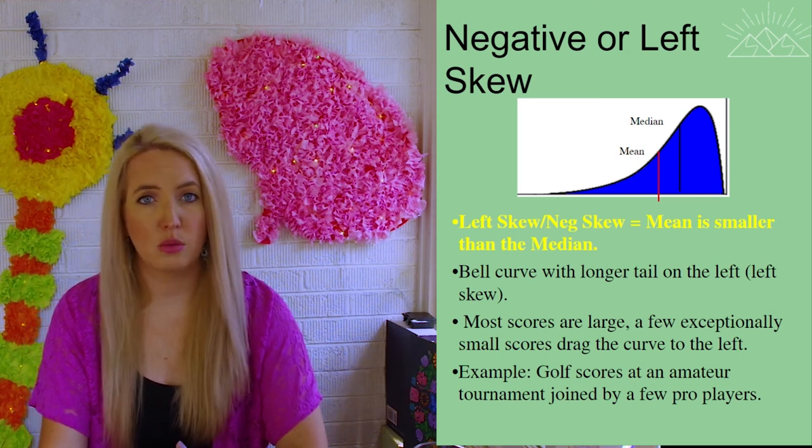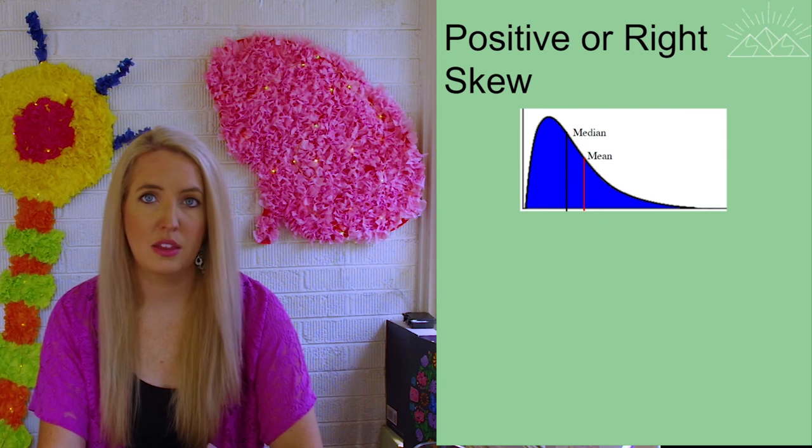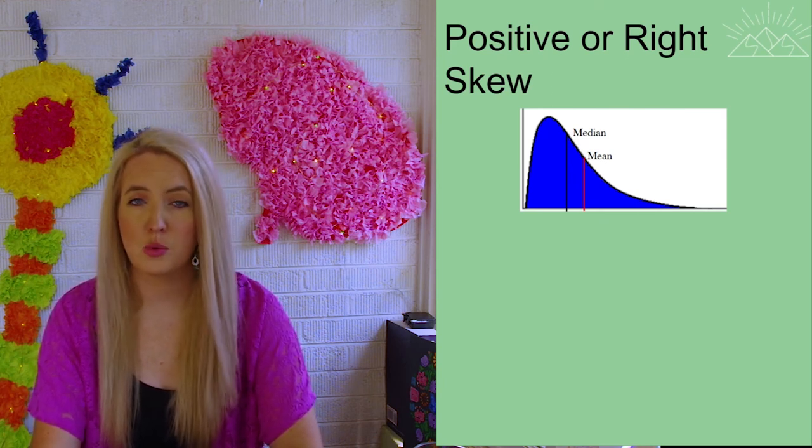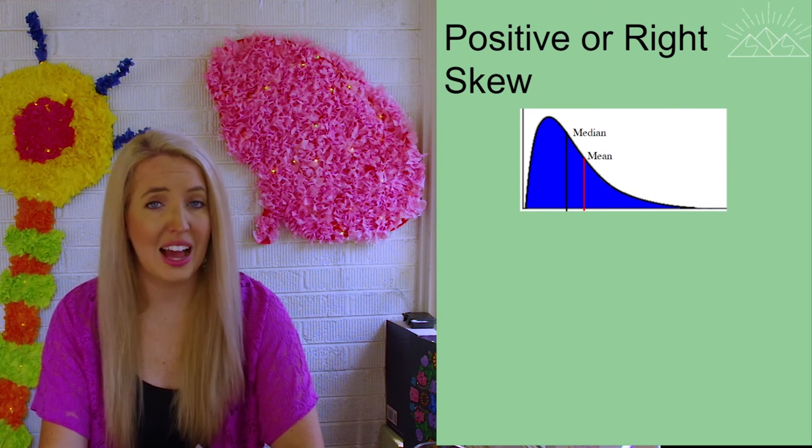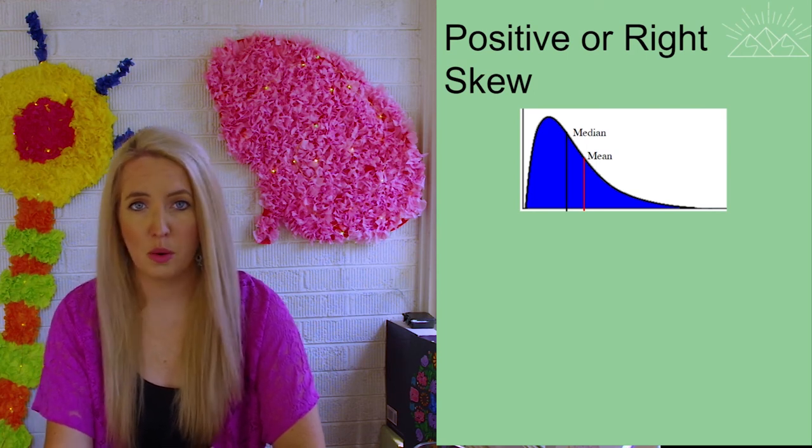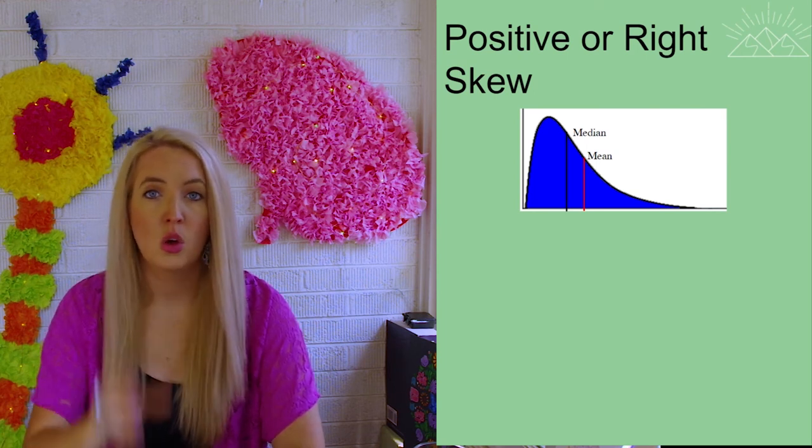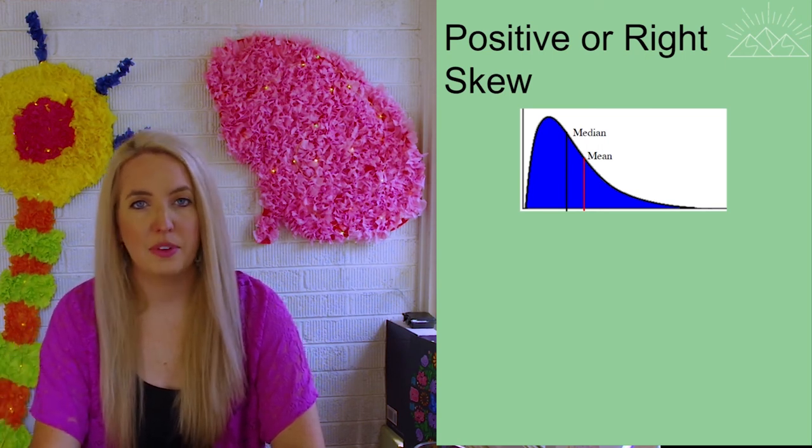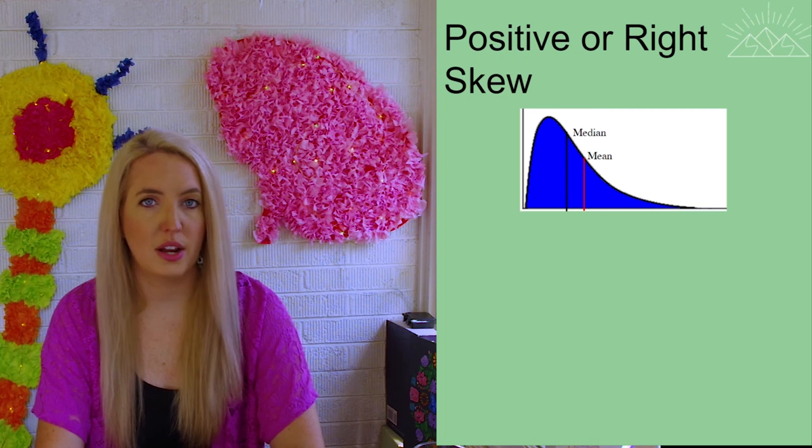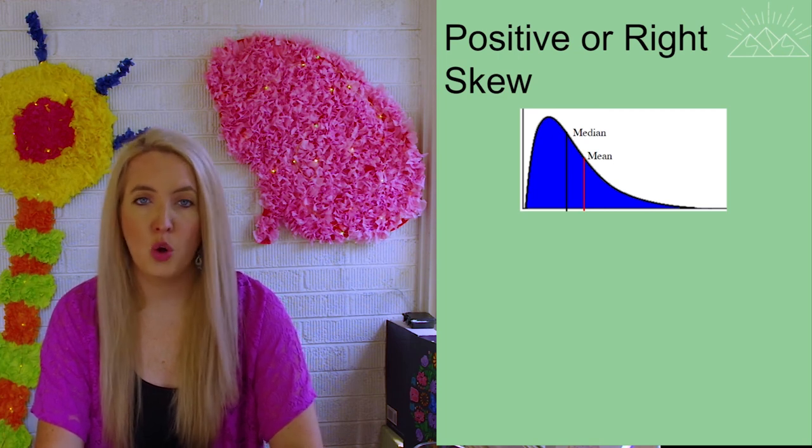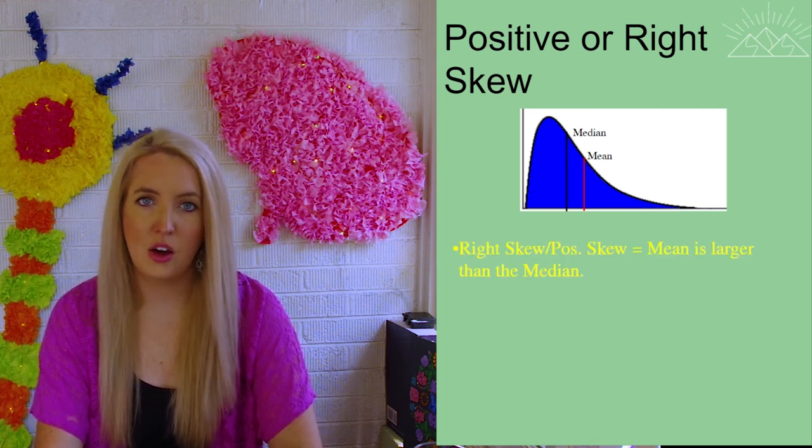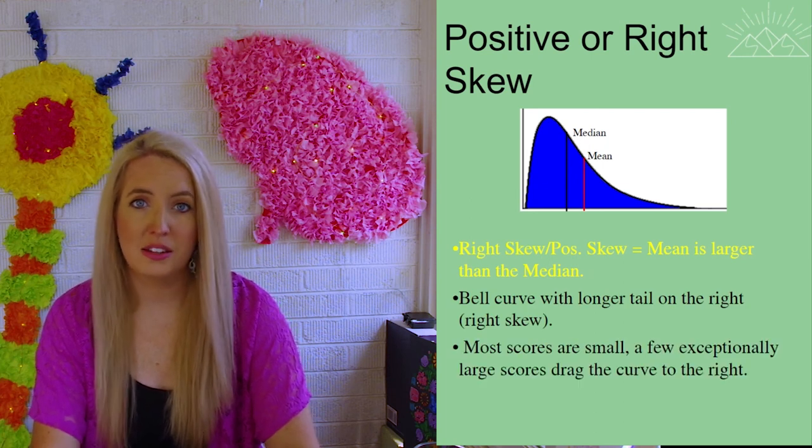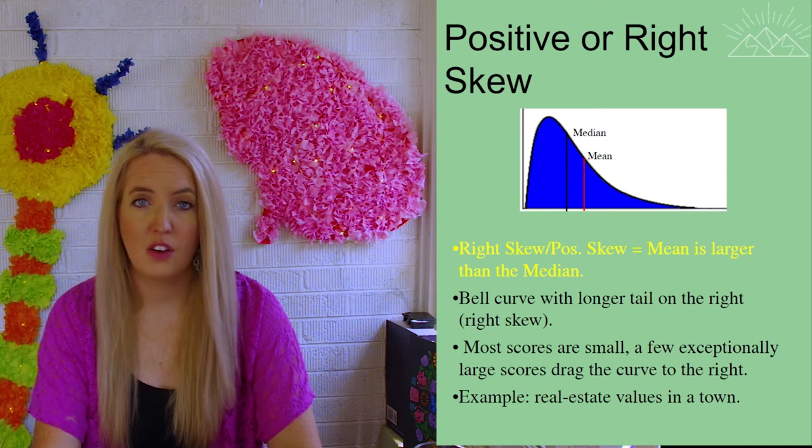A positive or right skew is what happens when the mean is greater than the median. And this usually happens when we have one outlier of a really high score, one high score pulling the data to the right, which causes this tail on the right side of the graph. This could happen for say example, home prices. If we have an average home price in a town,